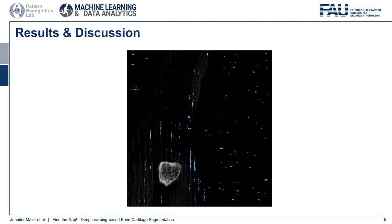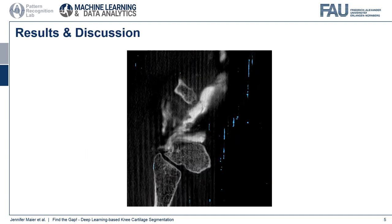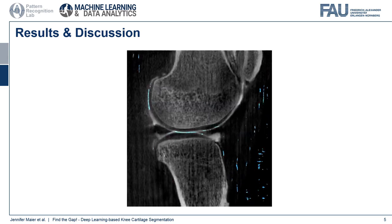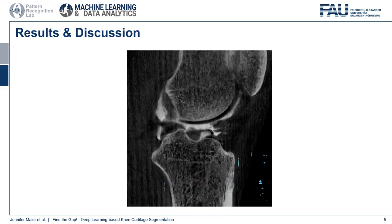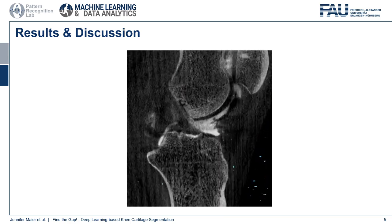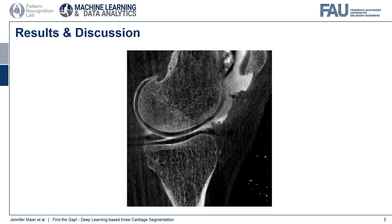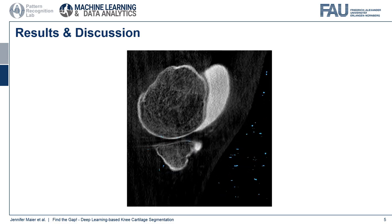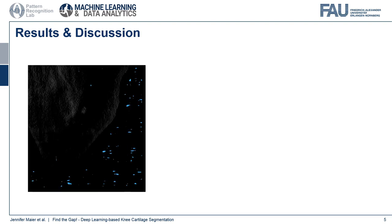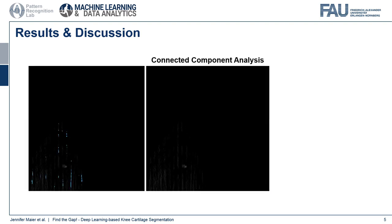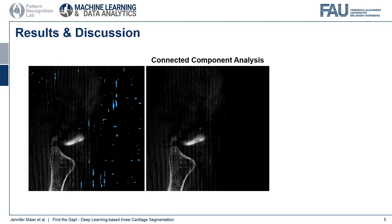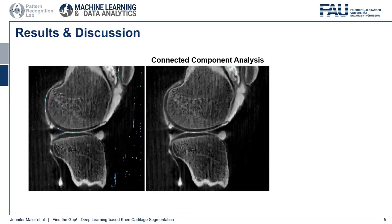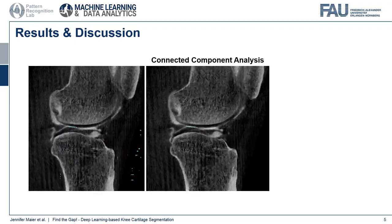The blue segmentation result shows that the network is able to find the cartilage surface, but also predicts many false positives. This is probably due to the fact that a large part of the training data contained cartilage voxels. We applied a connected component analysis to remove the false segmentations in the periphery and only keep the two largest point clouds representing the cartilage surface.